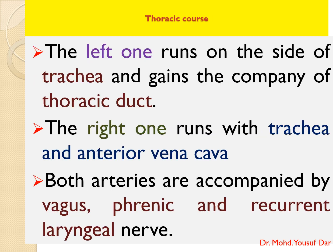Just in front of the thoracic inlet, the axillary arteries divert towards the medial surface of the first rib. The left one runs on the side of the trachea and gains the company of the thoracic duct, while the right one runs with the trachea and anterior vena cava. Both arteries are accompanied by the vagus nerve, phrenic nerve, and recurrent laryngeal nerve.